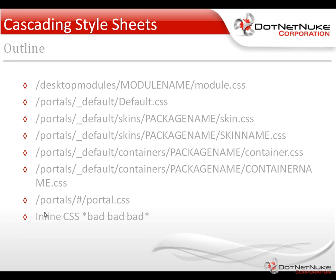In a previous video, we showed you how you can go in and edit portal.css, and in future videos we'll deal more directly with the skins and the containers. After portal.css comes anything that's loaded inline, either on the page or even in the header of the page, depending on the modules in play. Typically, this inline CSS is bad form — it's not recommended. The problem being, if it comes after portal.css, portal.css typically provides your last line of defense, your last ability to override CSS. If there's code after that, you can't override it typically with portal.css, unless you start using the important property within style sheets.